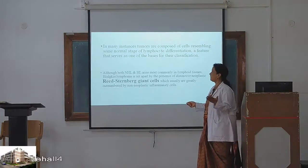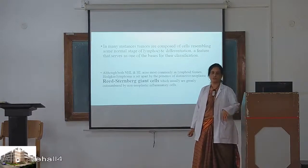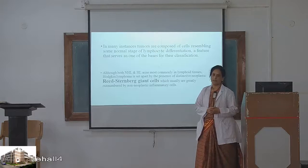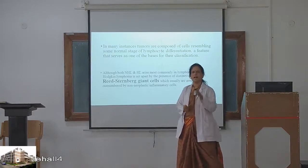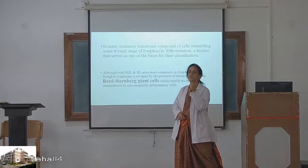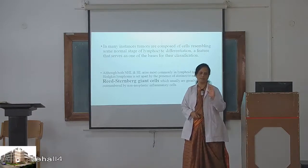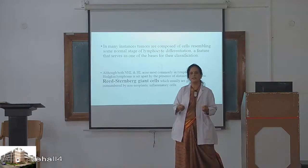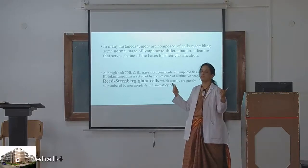Why are they called Reed-Sternberg? It was Dorothy Reed and Sternberg — the scientists who discovered the presence of this cell. If we abbreviate Reed-Sternberg cell, we call it RS cells. RS cells means Reed-Sternberg cells. They are present in Hodgkin's lymphoma. RS cells are not seen in non-Hodgkin's lymphoma, which is what makes Hodgkin's lymphoma peculiar.